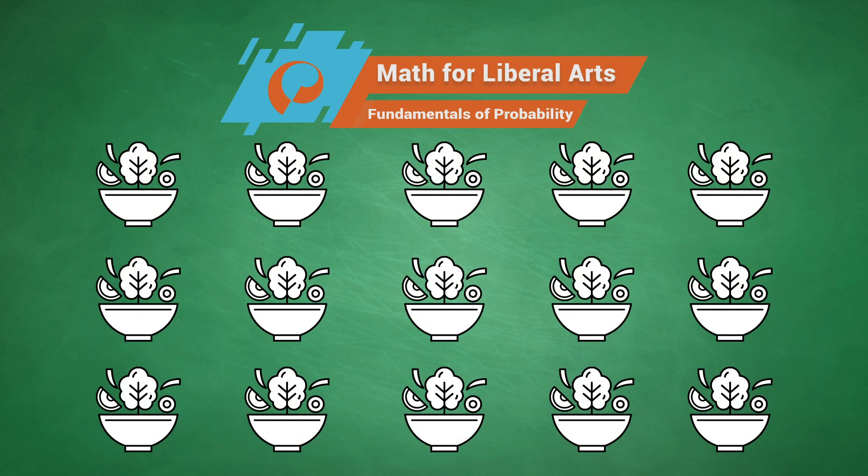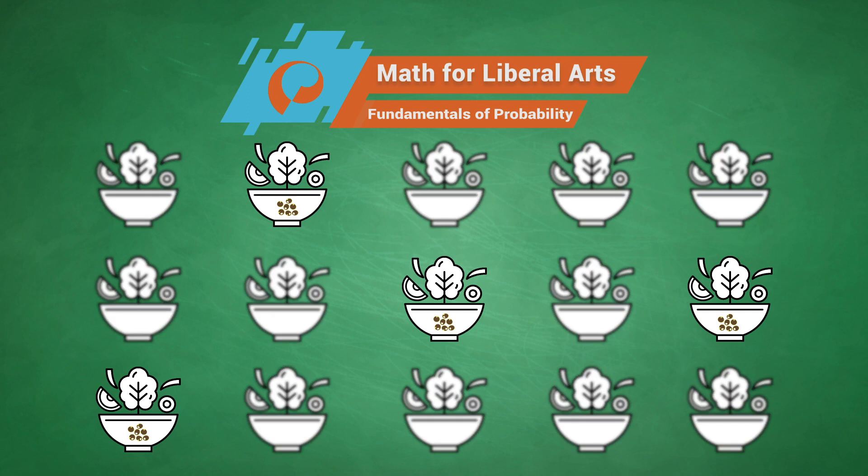Let's look at the die example again. Say 4 recipes contain quinoa. If there are 15 total recipes, the probability that the one selected contains quinoa would be 4 out of 15.